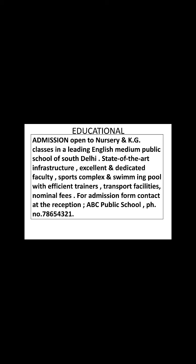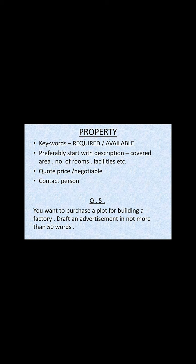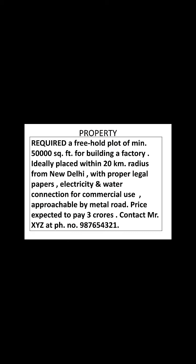For 'Property', the keywords are: required, available. Preferably start with a description — covered area, number of rooms, facilities — then quote the price or state negotiable, and provide a contact person. Example: you want to purchase a plot for building a factory. Draft an advertisement in not more than 50 words. Answer — Required: a freehold plot of minimum 50,000 square feet for building a factory, ideally placed within a 20-kilometer radius from New Delhi, with proper legal papers, electricity and water connection for commercial use, approachable by metal road. Price expected to pay: three crores. Contact Mr. XYZ at phone number 987654321.